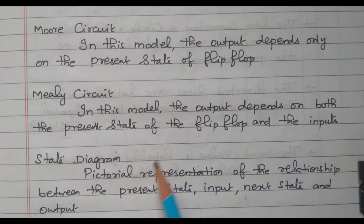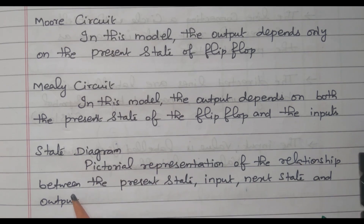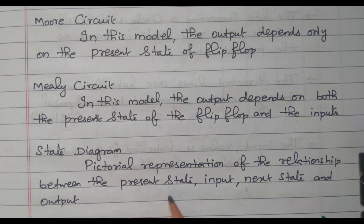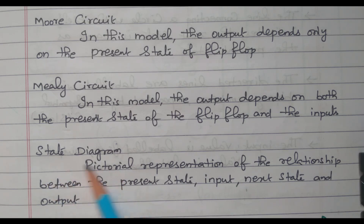These circuits are represented by the state diagram. What is a state diagram? It is a pictorial representation of the relation between present state, input, next state, and output — what is the input, what is the output, what is the present state, what is the next state — all represented pictorially. Similarly, we have a state table, which represents how the states are changed.